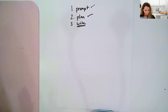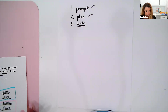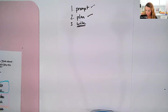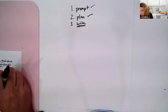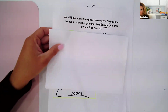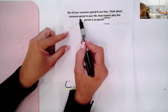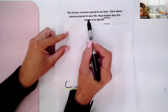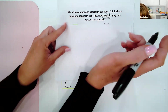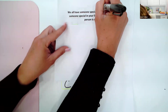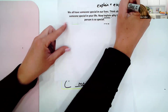Let's look at this example here. Here's an example of a prompt: We all have someone special in our lives. Think about someone special in your life. Now explain why this person is so special. We can see the keyword is 'explain.' Anytime you see the keyword 'explain,' you know you are writing an expository essay.